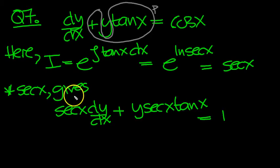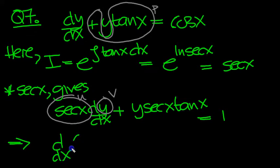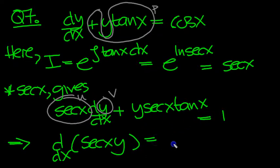So here we can circle the u and the v. Here's u, agreed. And here's v. It's always in those positions. So now we can write then the d by dx of u times v. Sec x times y is equal to 1.